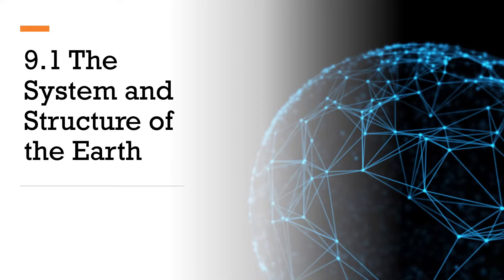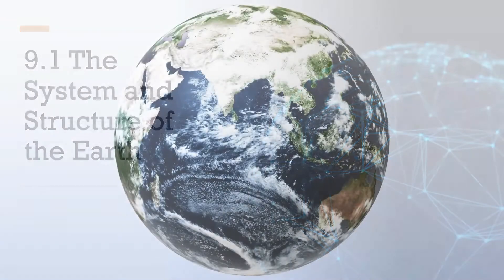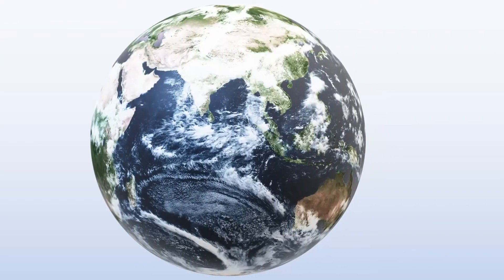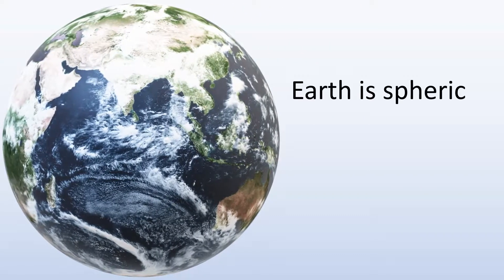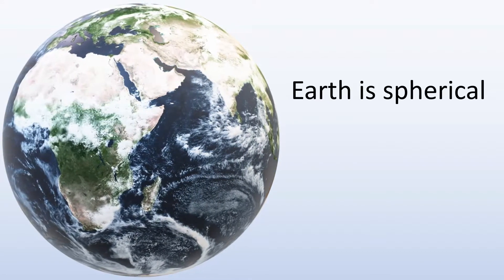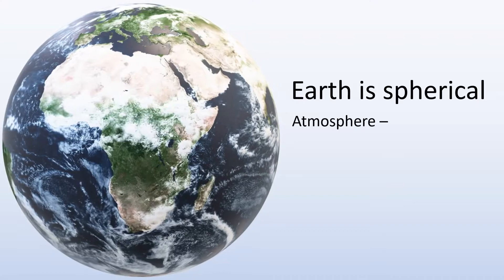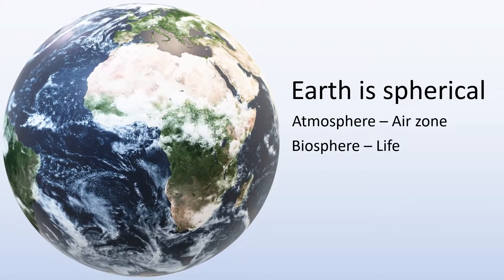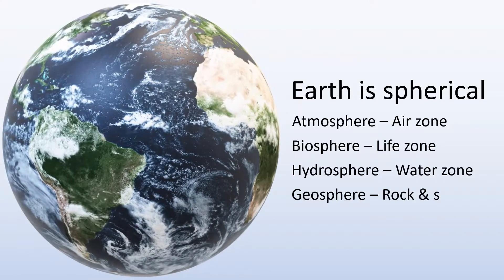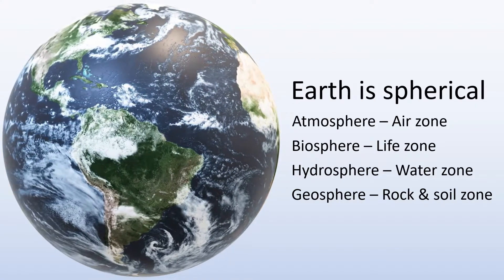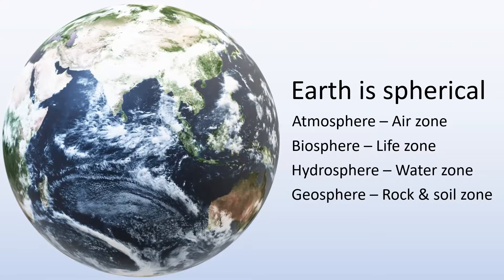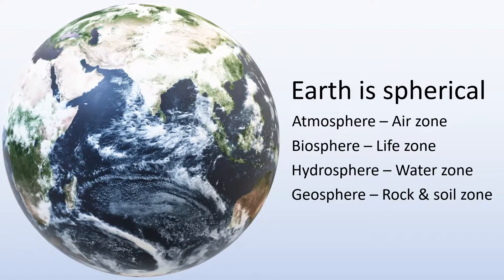Let us talk about the system and structure of the Earth. This is our beautiful home planet. The planet is actually spherical, so due to the sphere-shaped nature, our Earth is actually separated into four different parts: the atmosphere, biosphere, hydrosphere, and geosphere. Atmosphere refers to the air zone, biosphere refers to the life zone, hydrosphere refers to the water zone, and finally geosphere, our rock and soil zone.